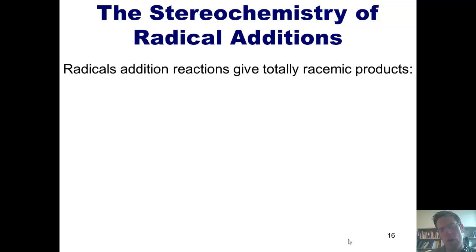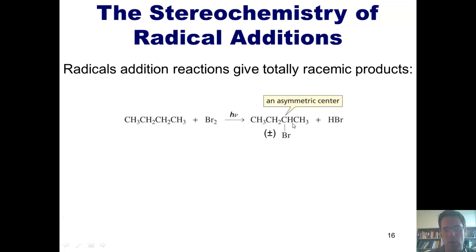An additional nuance in the world of radical chemistry deals with stereochemistry or the three-dimensional configuration of the products. Radical addition reactions give totally racemic products. In other words, if I take a molecule like this and treat it with bromine under radical conditions, I'm going to get this as my major product.